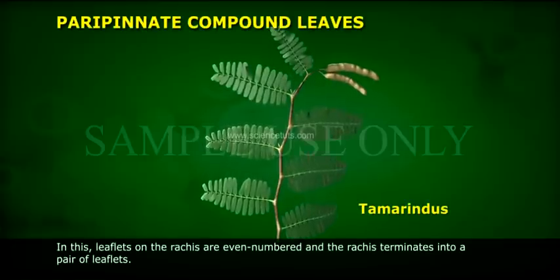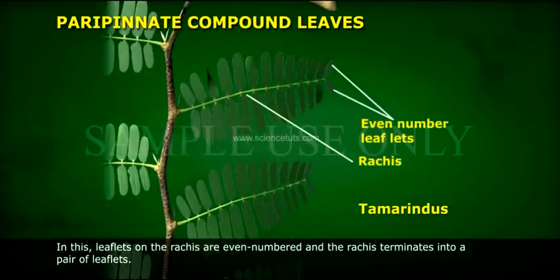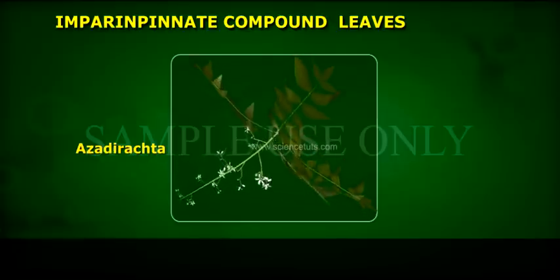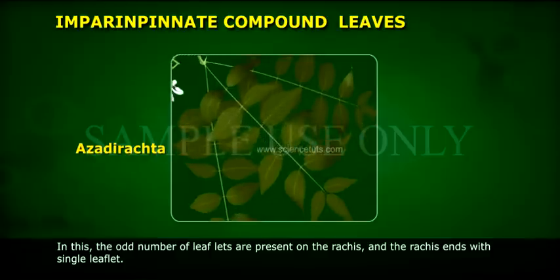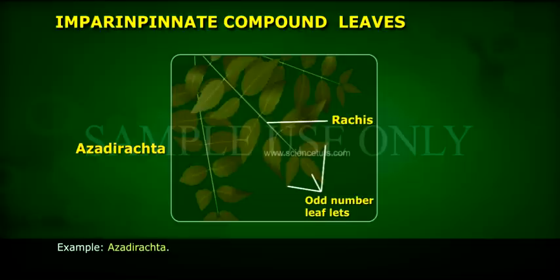Paripinnately compound leaves: the leaflets on the rachis are even-numbered, and the rachis terminates into a pair of leaflets. Example: Tamarindus. Imparipinnately compound leaves: an odd number of leaflets are present on the rachis, and the rachis ends with a single leaflet. Example: Azadirachta.